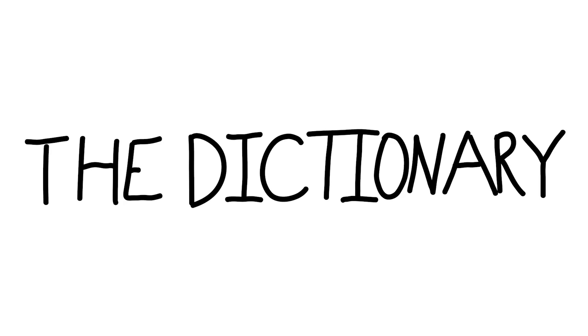We are going to move on to Babel, B-A-B-E-L, first B capitalized. This is a noun from the 14th century. 1: a city in Shinar where the building of a tower is held in Genesis to have been halted by the confusion of tongues — they were building a very tall tower trying to reach heaven, but had to stop because of too many languages being spoken. 2, often not capitalized: 2A, a confusion of sounds or voices; 2B, a sense of noise or confusion.